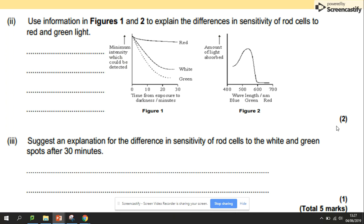Use the information in figures one and two and explain the difference in sensitivity of rod cells to red and green light. What we can see here: the maximum intensity for red is the highest; white and green are lower, but the amount of light absorbed is different here for different colors.